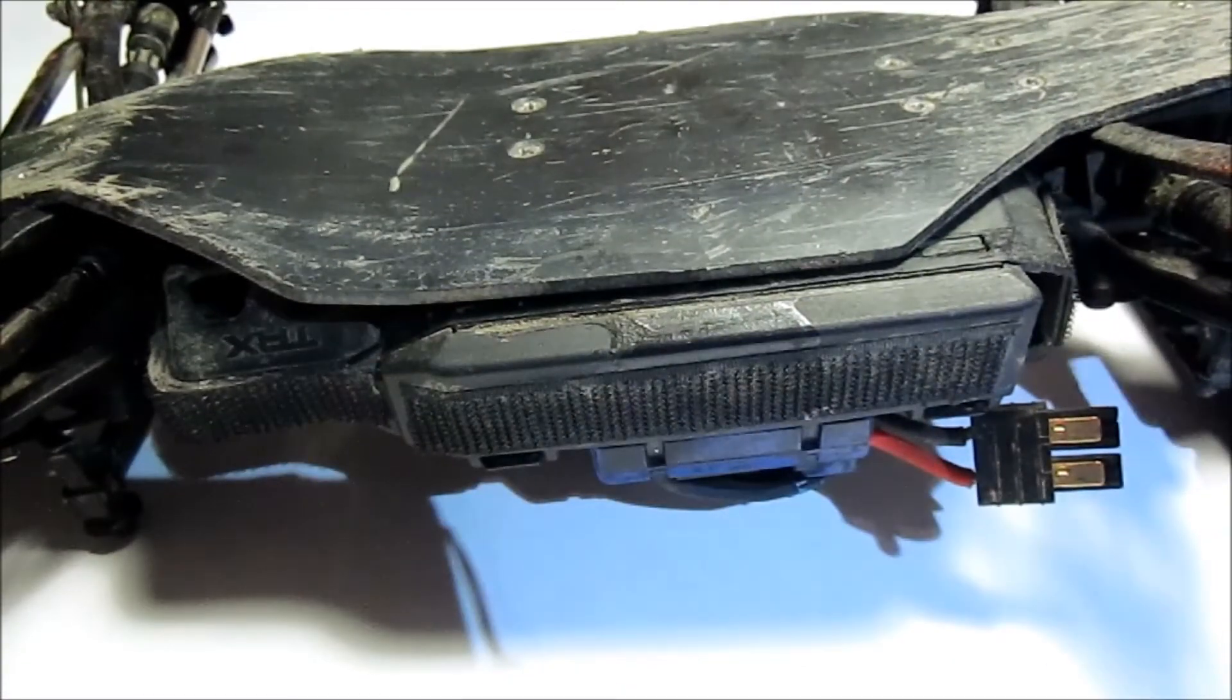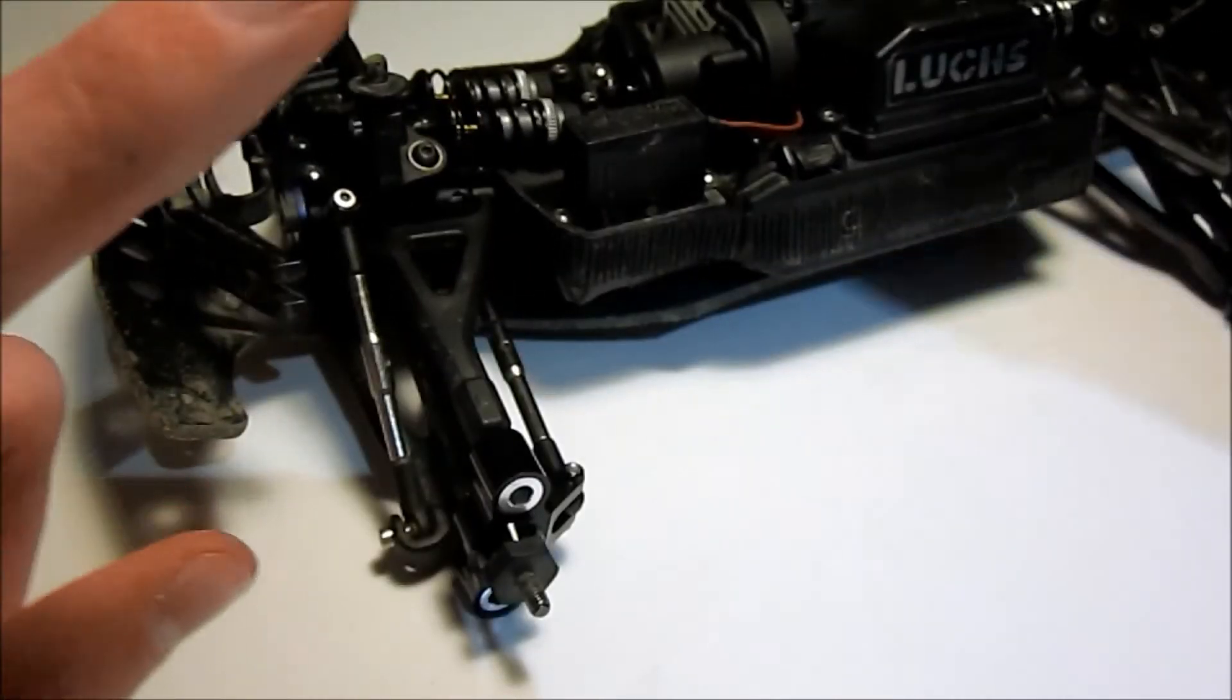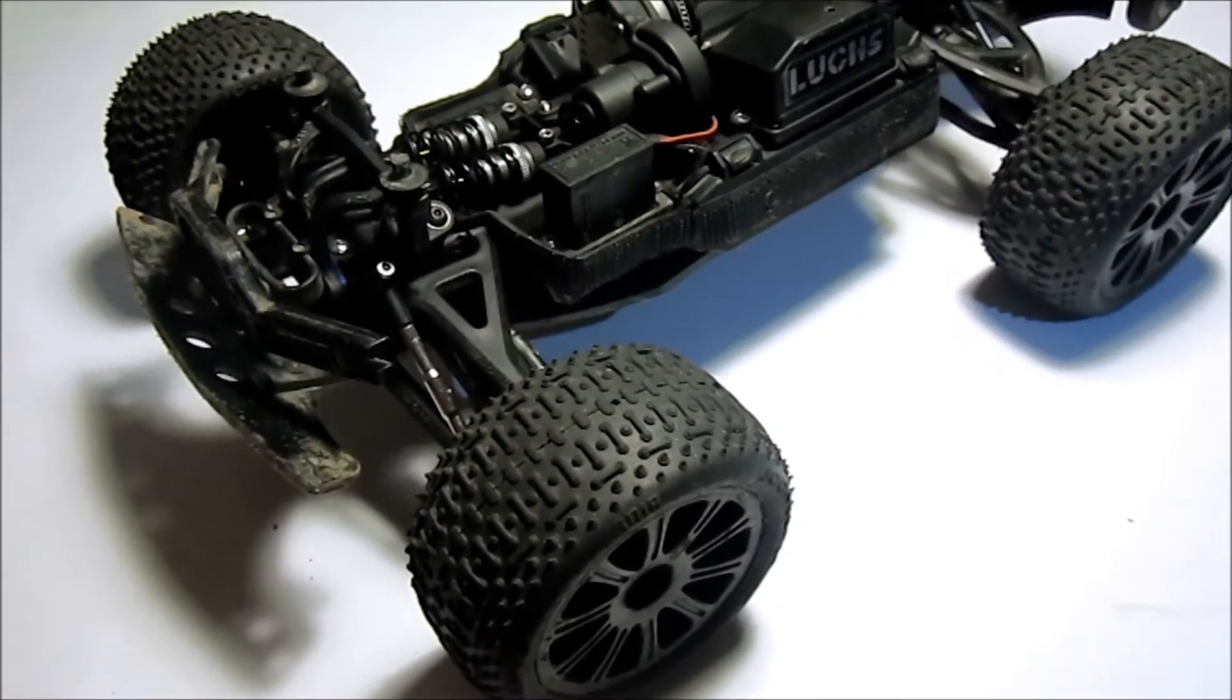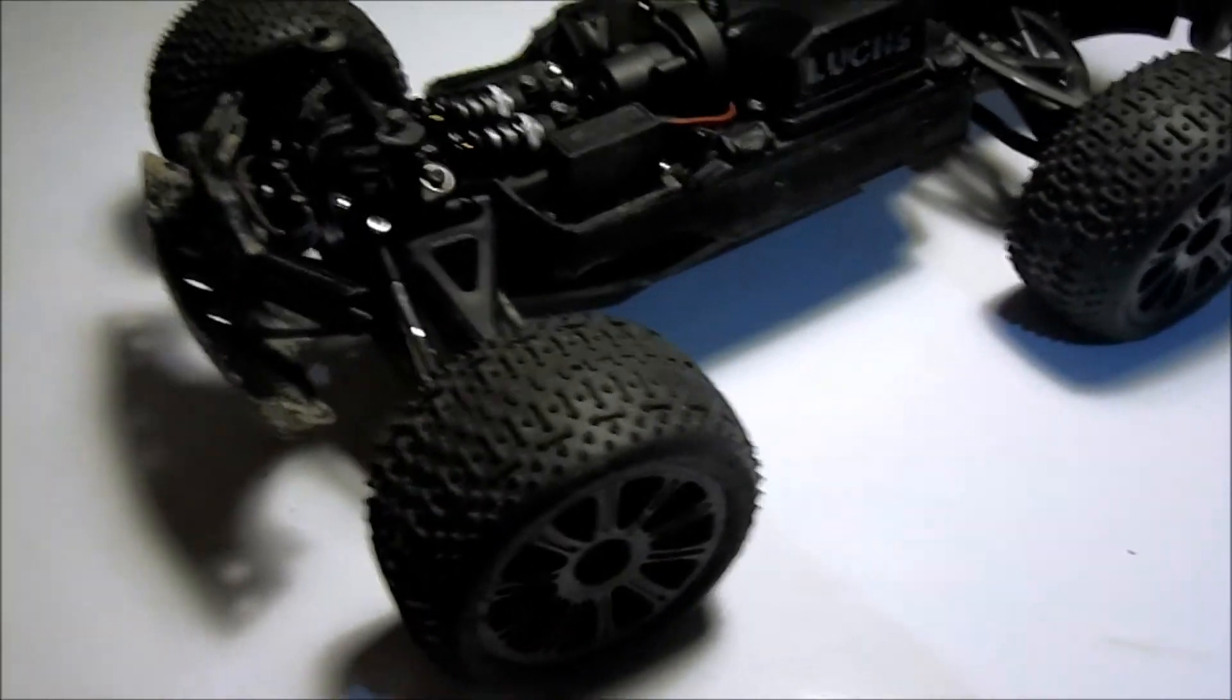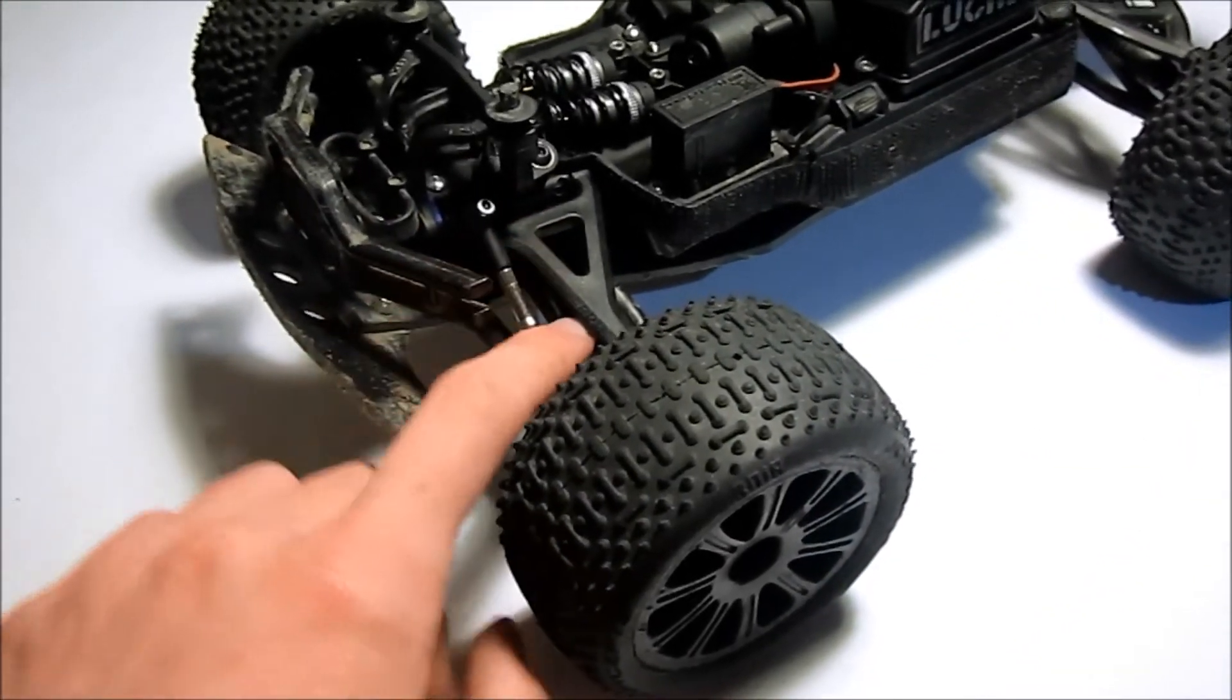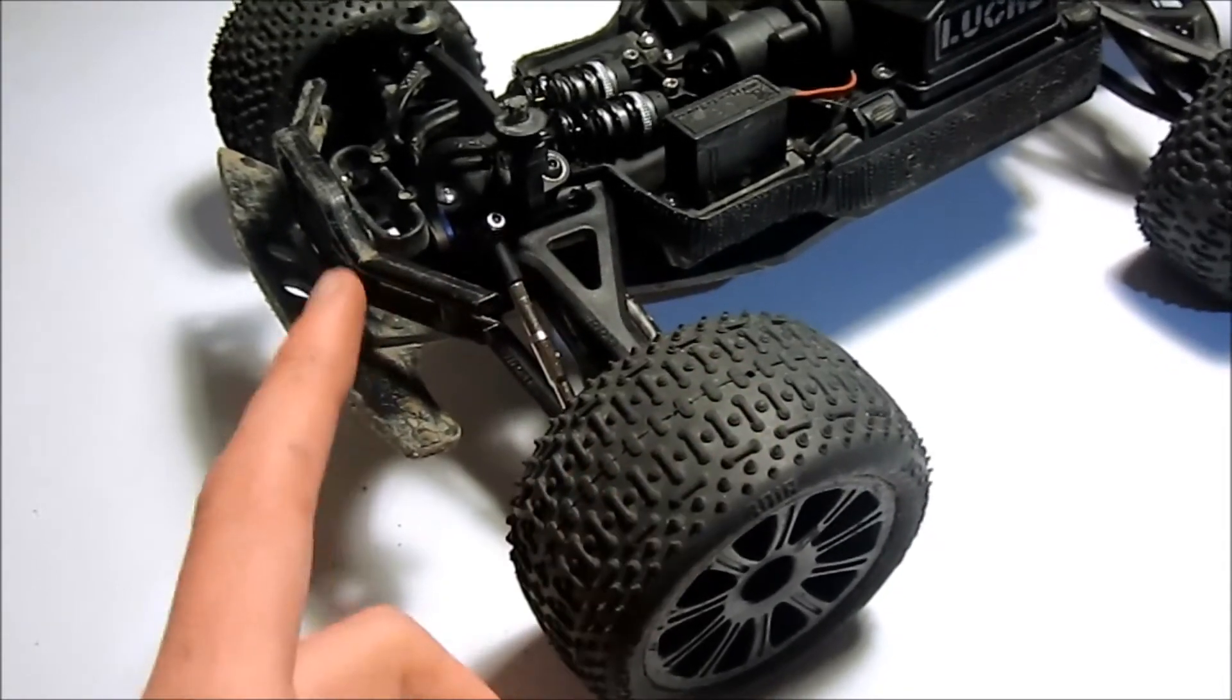Now T-bone is on, so it's time to put on the tires. The wheels have been put on, and now if you want, you can adjust your turnbuckles and pivot balls to adjust the toe in and out and also the camber.